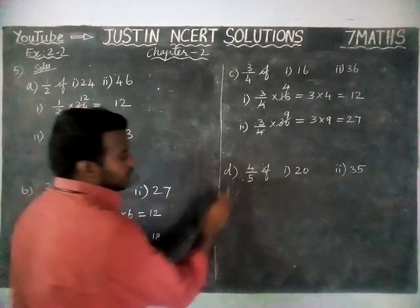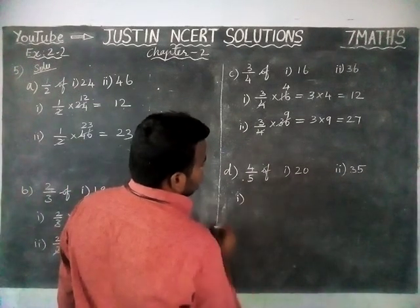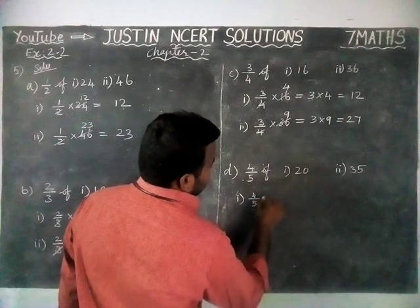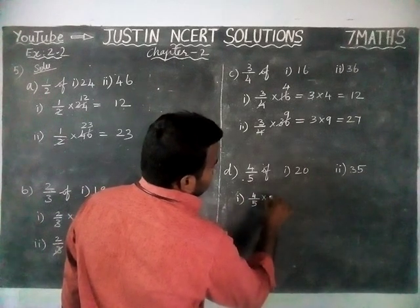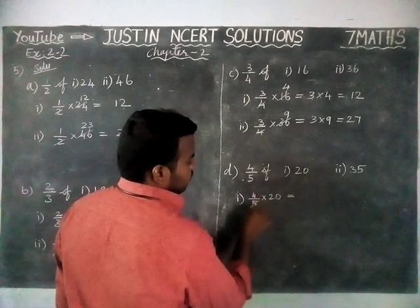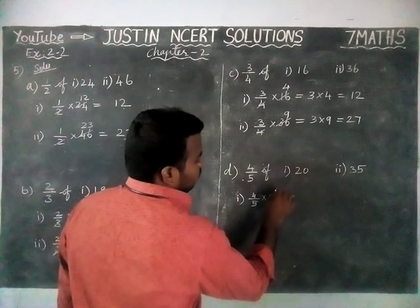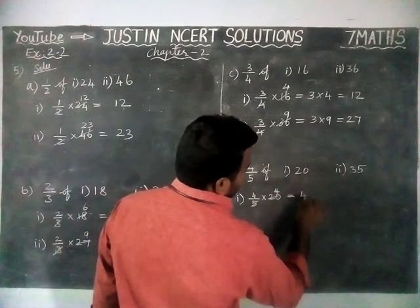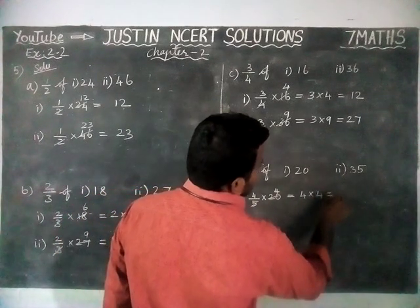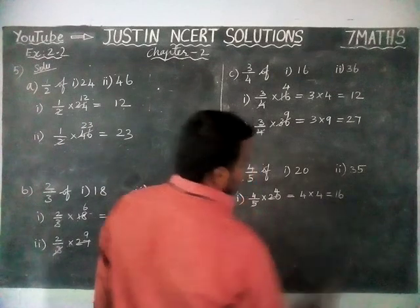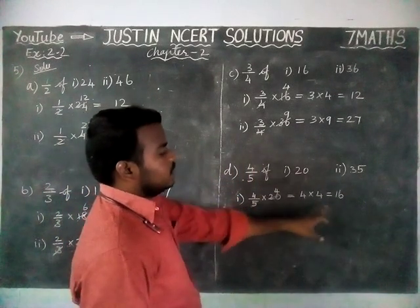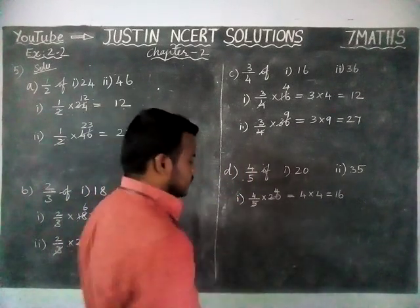Option D, first problem: 4 by 5 of 20 is equal to — 5 goes into 20 four times. Now, 4 into 4: 4 fours are 16. So, 4 by 5 of 20 is equal to 16.